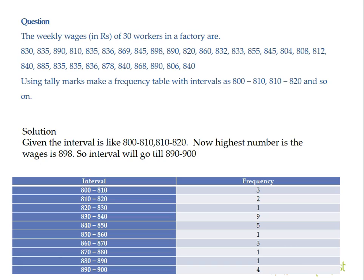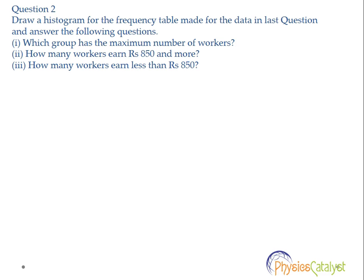If we count the workers whose wages lie between 800 to 810, we get three workers, so the frequency is three. Similarly, for workers whose wages are between 810 to 820, we find two workers, so the frequency is two. We can find the workers for each interval this way and complete the frequency distribution table. Tally marks basically just means counting the number of workers.